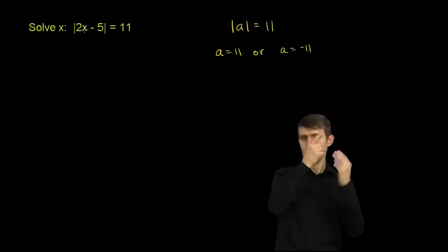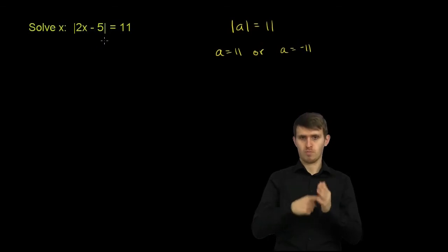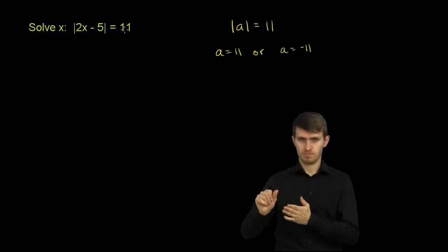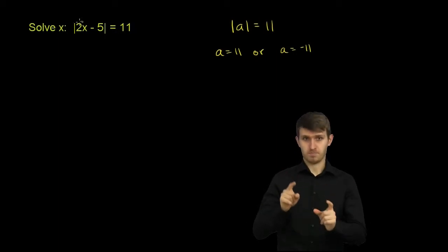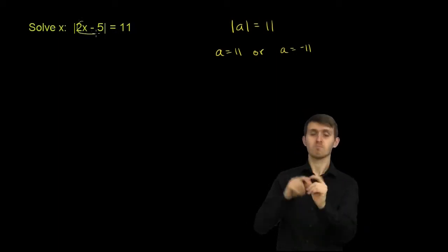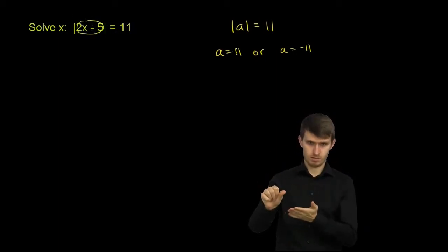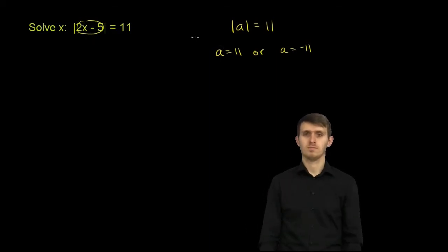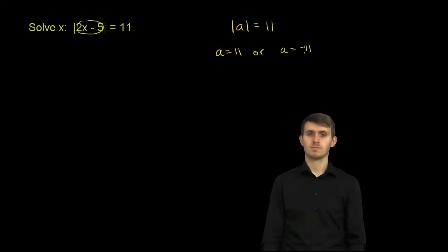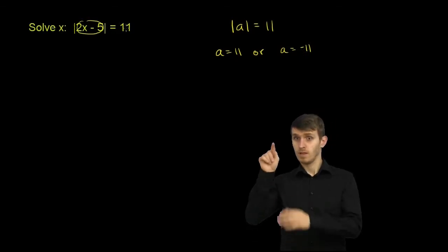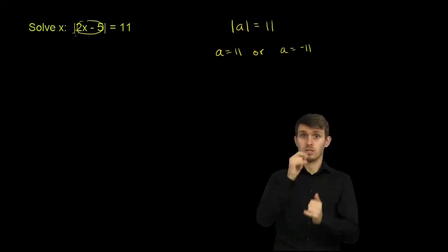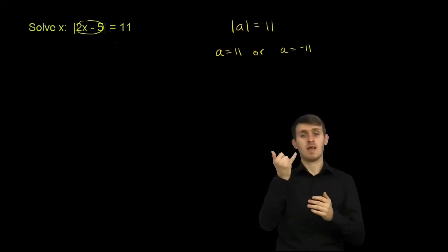That's the exact same logic you apply to an equation like this. If the absolute value of 2x minus 5 is equal to 11, that means the stuff inside the absolute value sign either equals 11, or the stuff inside equals negative 11. Because if it equals 11, the absolute value of 11 is 11. If it equals negative 11, when you take its absolute value, it'll still be equal to 11.